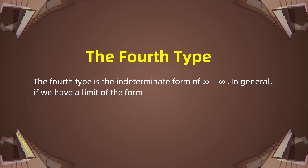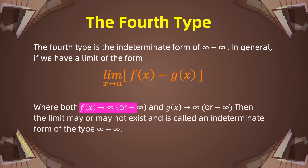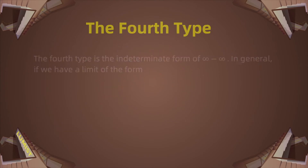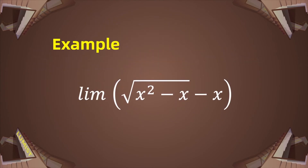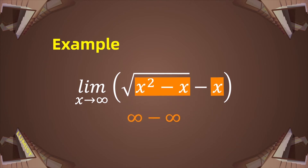The fourth type is the indeterminate form of infinity minus infinity. In general, if we have a limit of f(x) minus g(x) as x approaches a, where both f(x) and g(x) approach infinity or negative infinity, then the limit may or may not exist, and it is called the indeterminate form of type infinity minus infinity. For example, consider the limit of √(x² - x) - x as x approaches infinity. Inside the square root, as x approaches infinity, we get infinity, and minus infinity gives us the indeterminate form of infinity minus infinity.